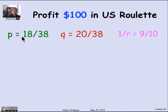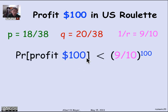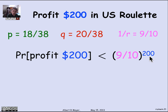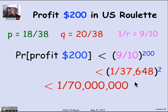For roulette, P = 18/38 and Q = 20/38, so 1/r = 9/10. We conclude the probability of winning $100, no matter how much you start with, is less than (9/10)^100 — which is where the 1-in-37,000 number comes from. If you want to win $200, this is exponentially decreasing, so the probability is (9/10)^200 — the square of the previous probability — giving about 1 in 70 million. Forget winning $200; it's just not likely to happen in your lifetime if you're betting at a rate like once a minute.